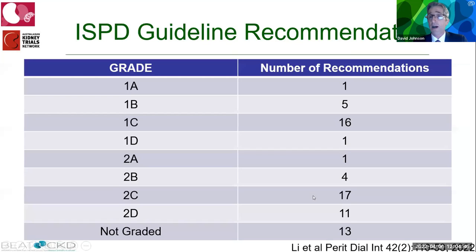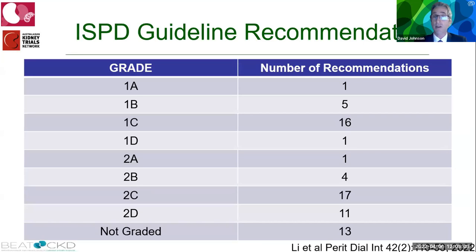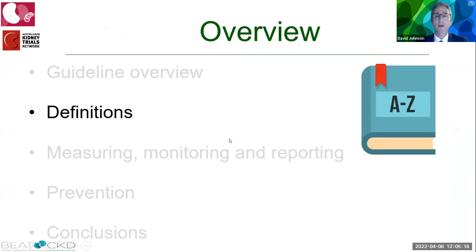In total there are 69 recommendations in the new 2022 ISPD guidelines. One-third are level-one or strong recommendations that PD clinicians should follow in almost all instances. Just over one-fifth are not graded, and the remainder are level-two recommendations where PD clinicians should exercise discretion depending on particular patient circumstances.